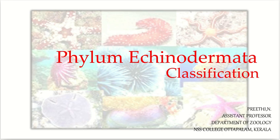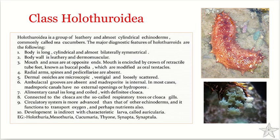Welcome back to the presentations on the classification of Phylum Echinodermata. In this presentation, we will be looking into the features and examples under Class Holothuroidea. The name comes from the Greek term 'holothurion,' which means sea cucumber. It includes approximately 1500 species, whose members are commonly referred to as sea cucumbers.